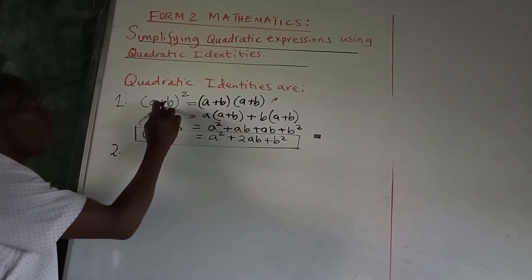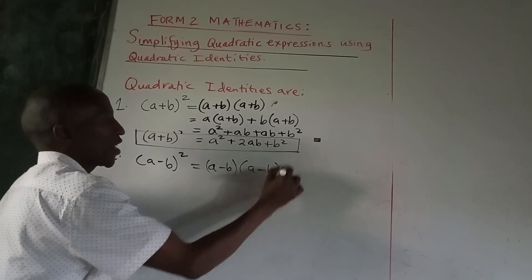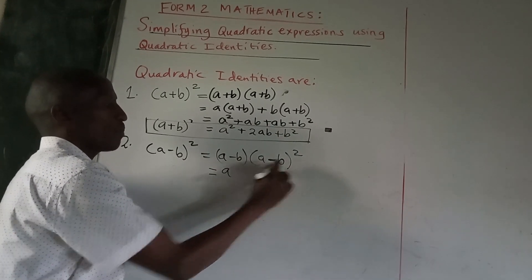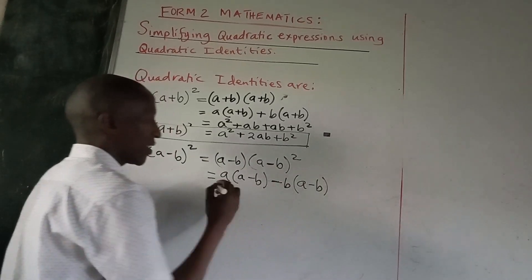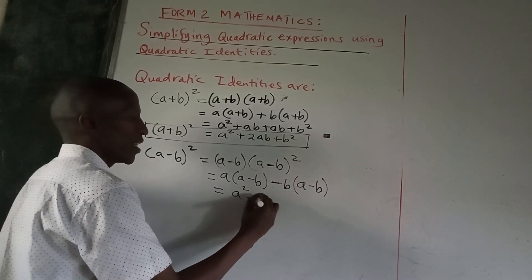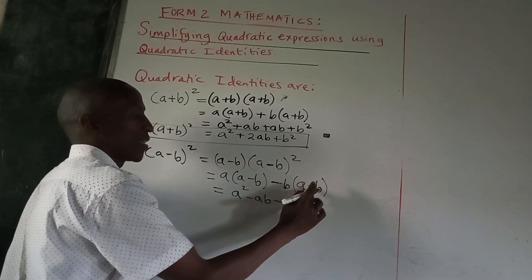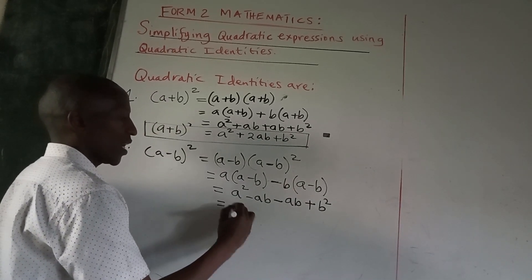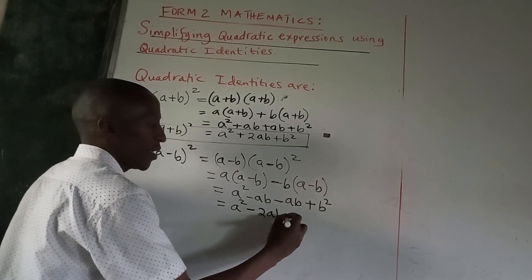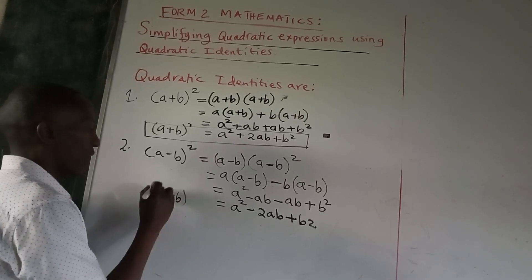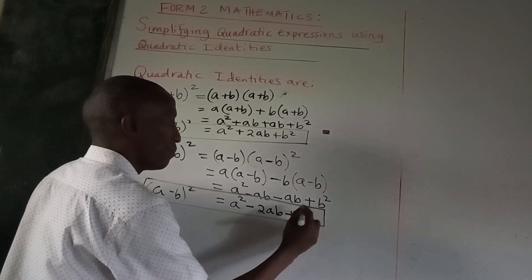The second identity: when we have a minus sign, (a − b)² = (a − b)(a − b). Expanding: a into (a − b) minus b into (a − b) gives a² − ab − ab + b². Since negative b times negative b is positive b², we get (a − b)² = a² − 2ab + b².